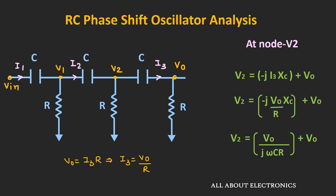Similarly, at node V1, the voltage V1 = V2 + I2/(jωC). Substituting the known values of V2 and I2, we get V1 = Vo·(1 + 3/(jωCR) − 1/(ω²C²R²)). Applying KCL at node V1, I1 = V1/R + I2, which gives I1 = (Vo/R)·(3 + 4/(jωCR) − 1/(ω²C²R²)).